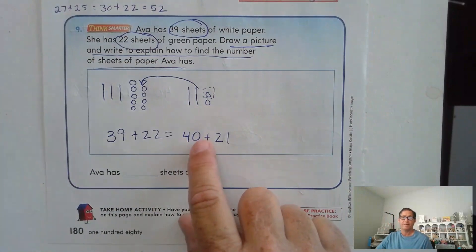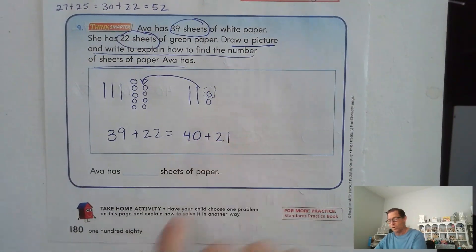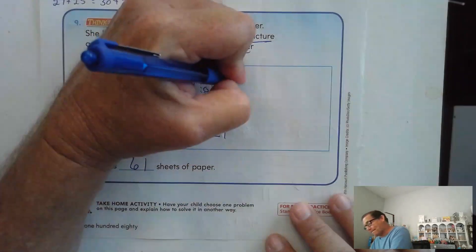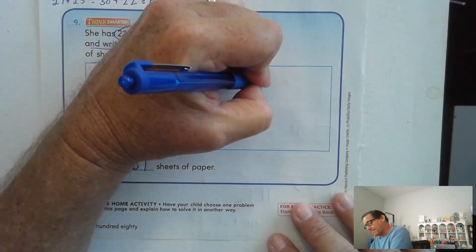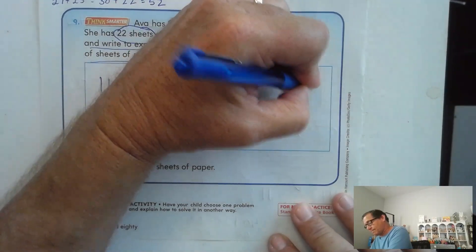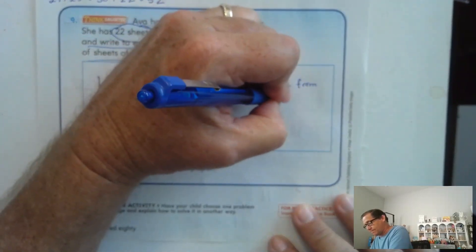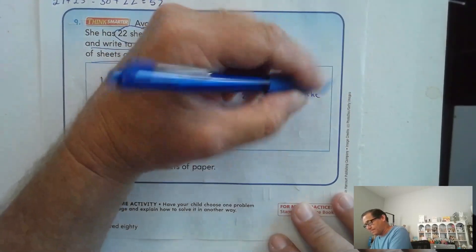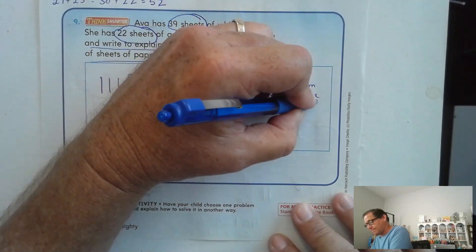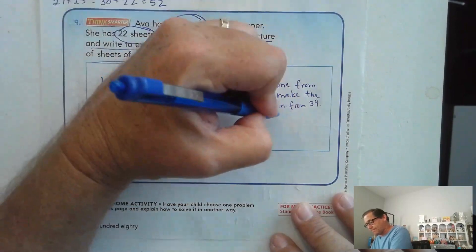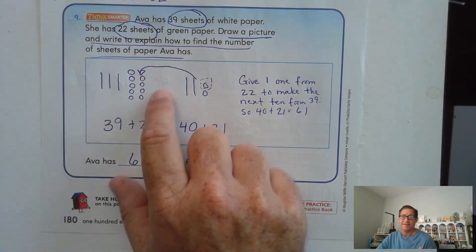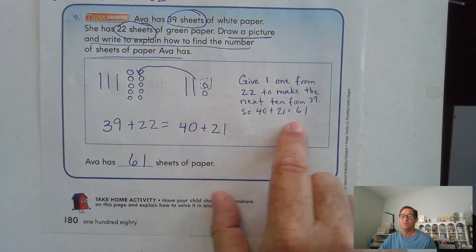Well 40 plus 21, 40, 50, 60, 1. So all I did was gave one of the ones to the 39, which made the next 10, 40. And that left me 40 plus 21, which was 61.